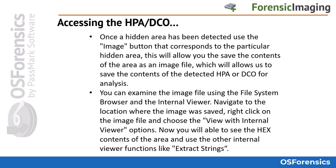Once a hidden area has been detected, use the Image button that corresponds to the particular hidden area to save its contents as an image file for analysis. You can examine the image file using the File System Browser and the Internal Viewer — navigate to the location where the image was saved, right-click on the image file, and choose the View with Internal Viewer option. You will then be able to see the hex contents of the area and use other Internal Viewer functions like Extract Strings.